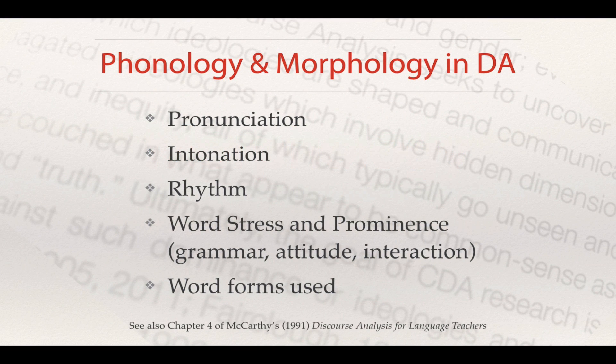But especially when we're talking about discourse analysis, phonology and morphology — we think about things like pronunciation, intonation, and rhythm. Particularly, discourse analysts will often be interested in things like word stress and prominence — so how the actual sound of the word is used within a sentence. Things like going up at the end of the sentence can make a grammatical change, turning something into a question just by having a word stressed. Attitude can also be conveyed by word stress and prominence.